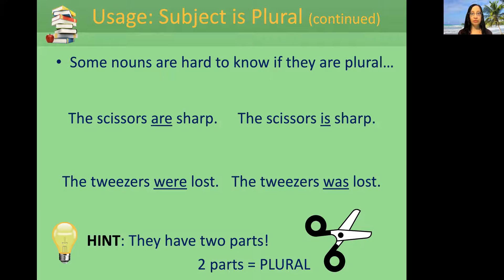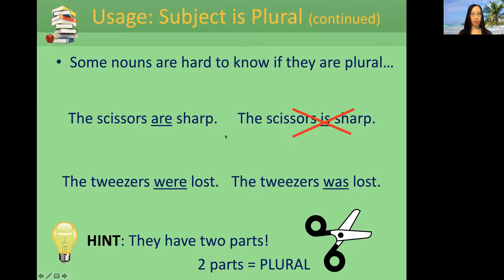Some nouns are hard to know if they are plural. For example, 'the scissors are sharp.' Does 'the scissors is sharp' sound correct to you? No. Scissors is plural — remember, it has the S at the end. The only time we would say 'the scissor is sharp' is if we drop the S.